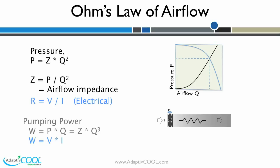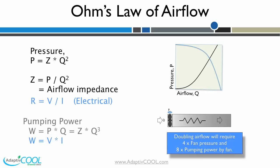By substituting for P, we get pumping power as Z times the cube of airflow. In other words, in a given system, to double the airflow it takes four times the fan pressure or eight times the fan power. These are called the fan laws, and we will use this in the following analysis.